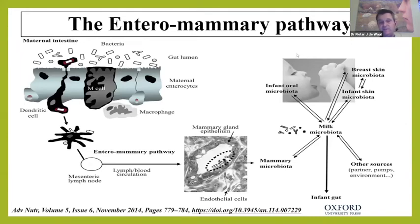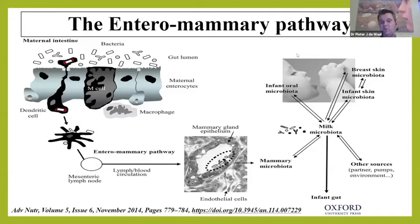People are now exploring this first thousand days — even before one year — as a window of opportunity to get the microbiome rich and diverse to prevent food allergy. The entero-mammary pathway explains how gut microbiota from the maternal intestine find their way into the mammary gland, ultimately consumed by the infant, along with infant oral microbiome and breast skin microbiome playing important roles in protecting against food allergy.